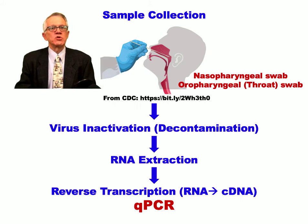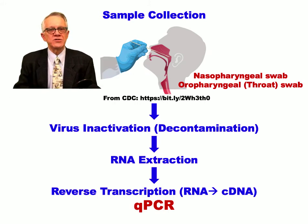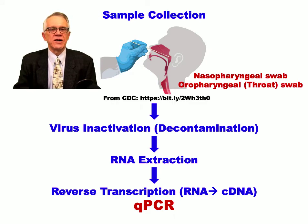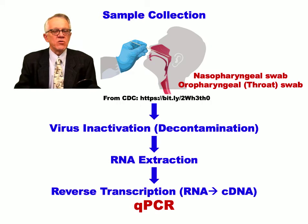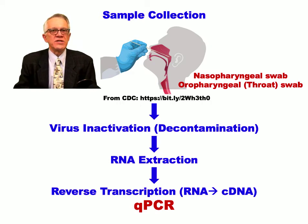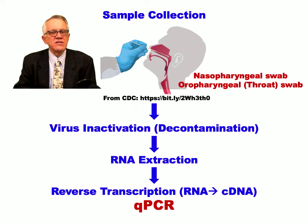The first step is to collect the sample, and there are various ways. One of the most comfortable ways is the saliva test. Once the sample comes to the lab, the first order of the day is to inactivate the virus to protect the people working with the samples. So the virus is inactivated, then the RNA is extracted.